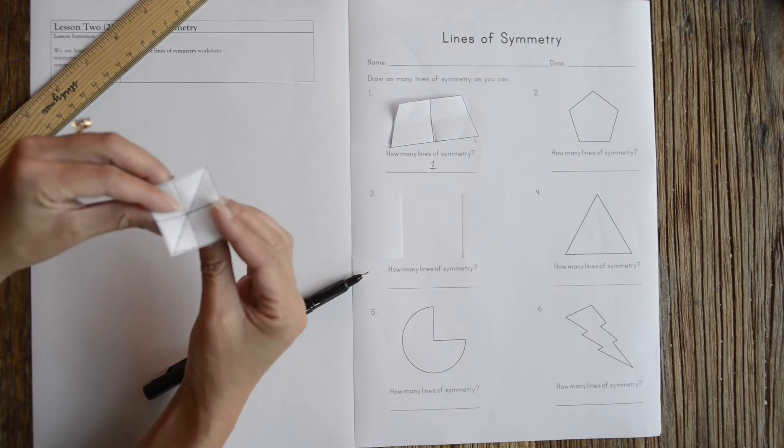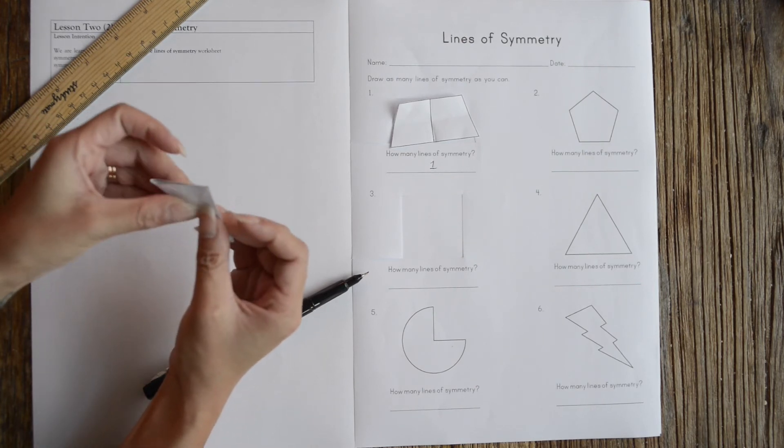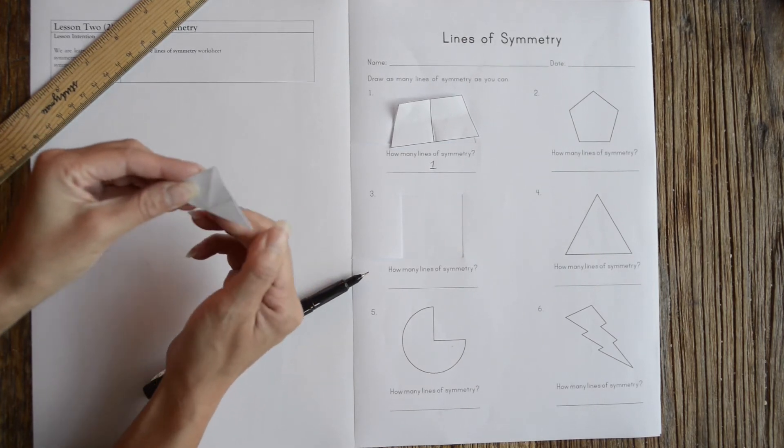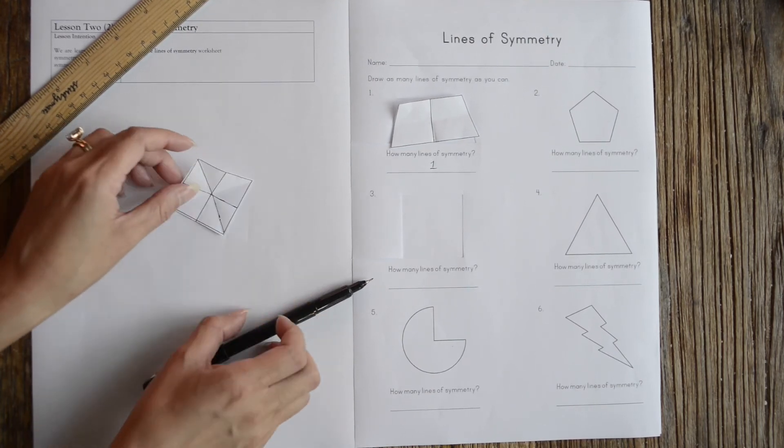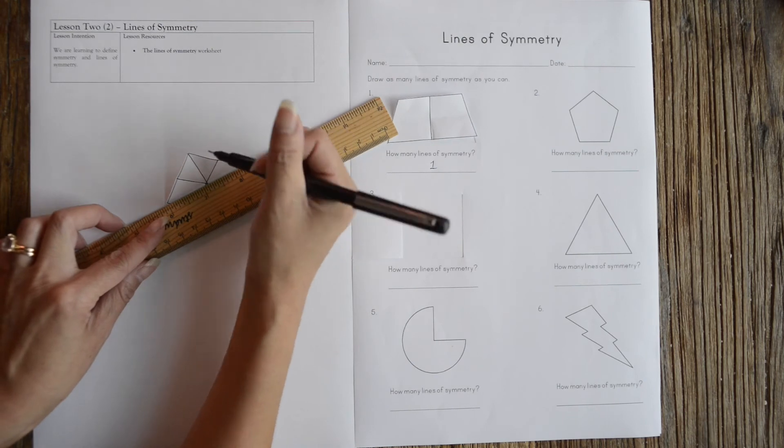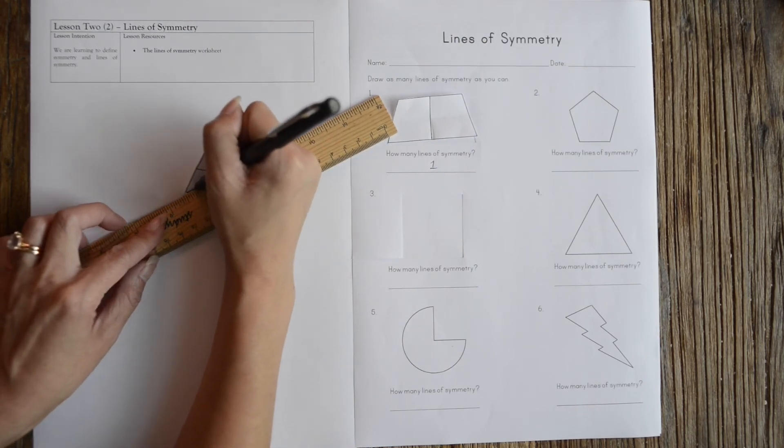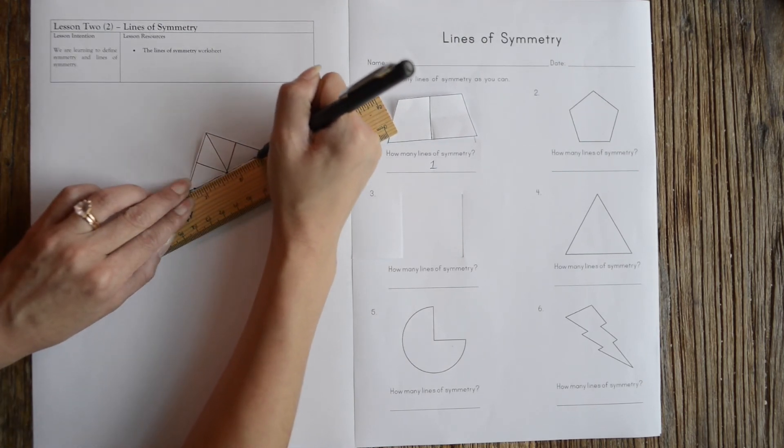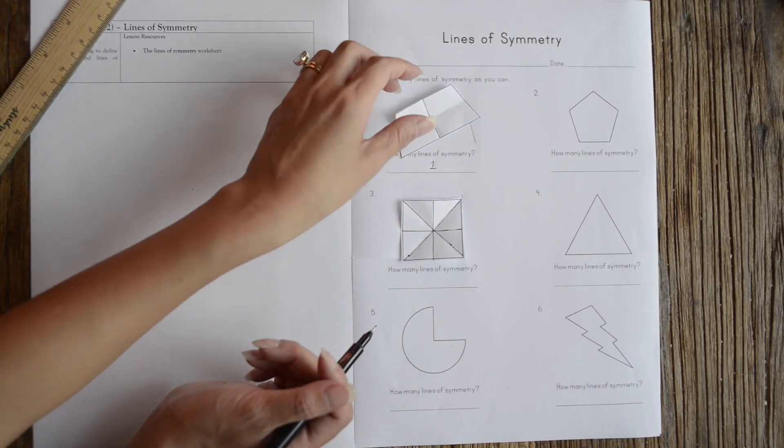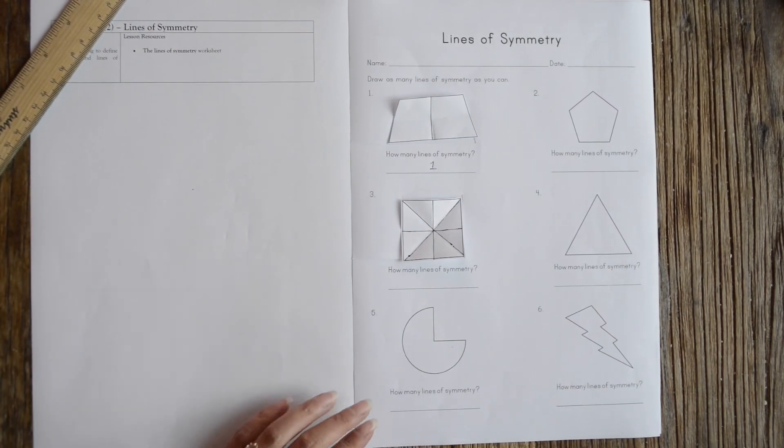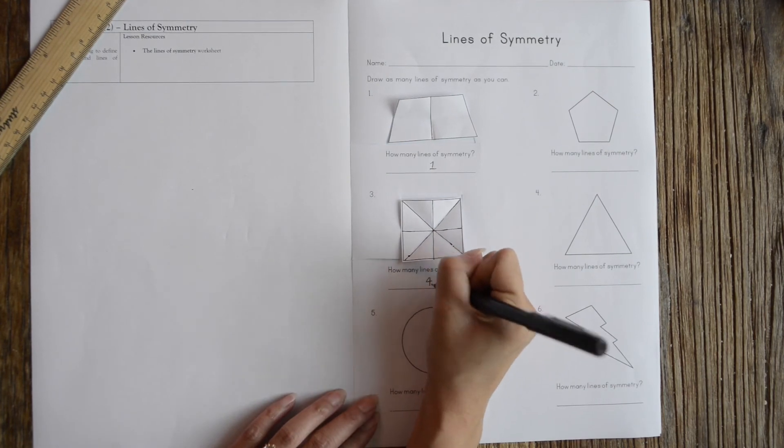And then I can also fold it up this way again. And that would create a fourth line of symmetry. So I've drawn all my lines of symmetry, and I can write down I have four lines of symmetry.